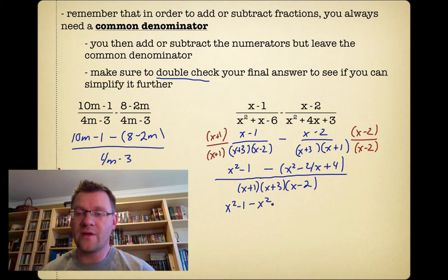And now I'm going to distribute this negative sign inside. So I get negative x squared, I get positive 4x, and I get negative 4. And that's all over x plus 1, x plus 3, and x minus 2.